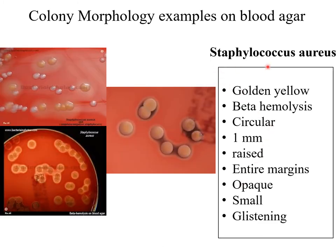Staphylococcus aureus has a golden yellow color — this is where the name 'aureus' comes from. It is well known for being beta-hemolytic, showing complete hemolysis on blood agar seen as a yellowish discoloration of the medium. The colonies are circular, small — 1 mm in diameter — raised, with entire margins, opaque, and glistening.